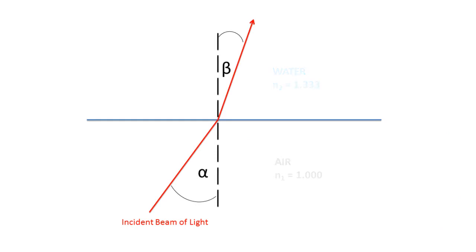This example illustrates a beam of light traveling from air, which has a refractive index of 1, entering water with a higher refractive index of 1.333, then refracting at an angle beta.